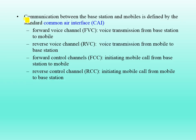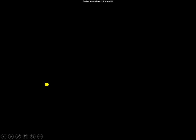Communication between the base station and mobile is defined by the standard Common Air Interface (CAI). The forward voice channel carries voice transmission from base station to mobile; the reverse voice channel carries voice from mobile to the base station. The forward control channel initiates calls from base station to mobile, and the reverse control channel initiates calls from mobile to the base station. That is the end of this slide — if you like the video, please click like, share, and subscribe. Thanks for watching.